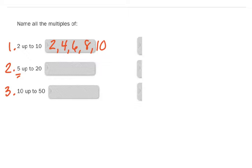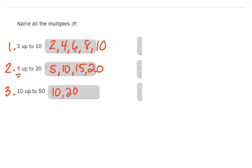Number two: five, ten, fifteen, and twenty. Multiples of ten up to fifty: ten, twenty, thirty, forty, and fifty.